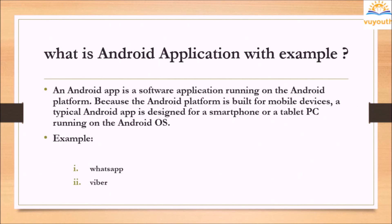What is an Android application with example? An Android app is a software application running on the Android platform. Because the Android platform is built for mobile devices, a typical Android app is designed for a smartphone or a tablet PC running on the Android OS. Example: WhatsApp and Viber.